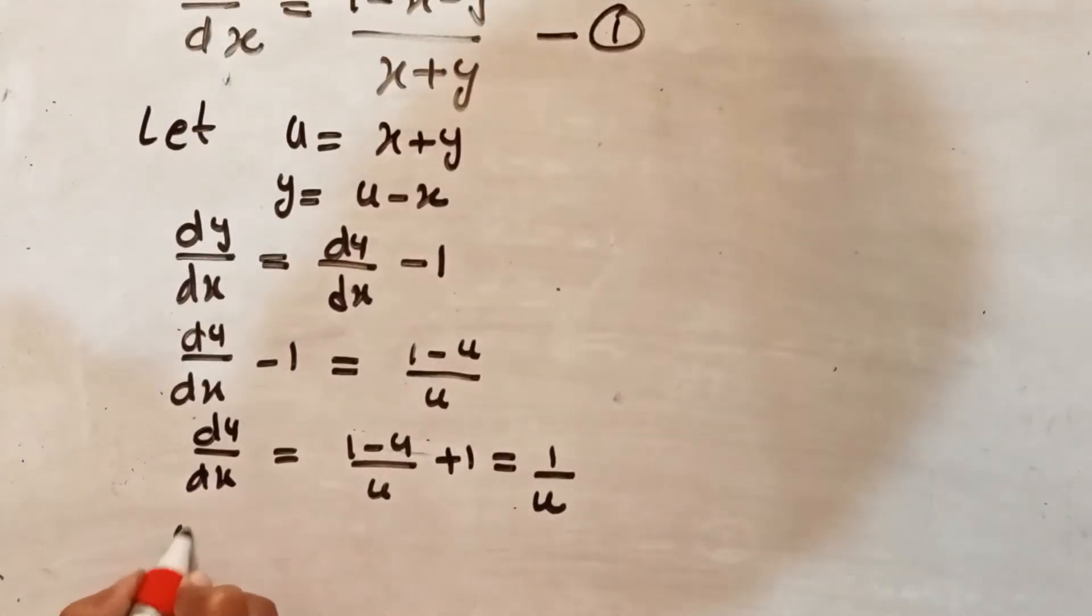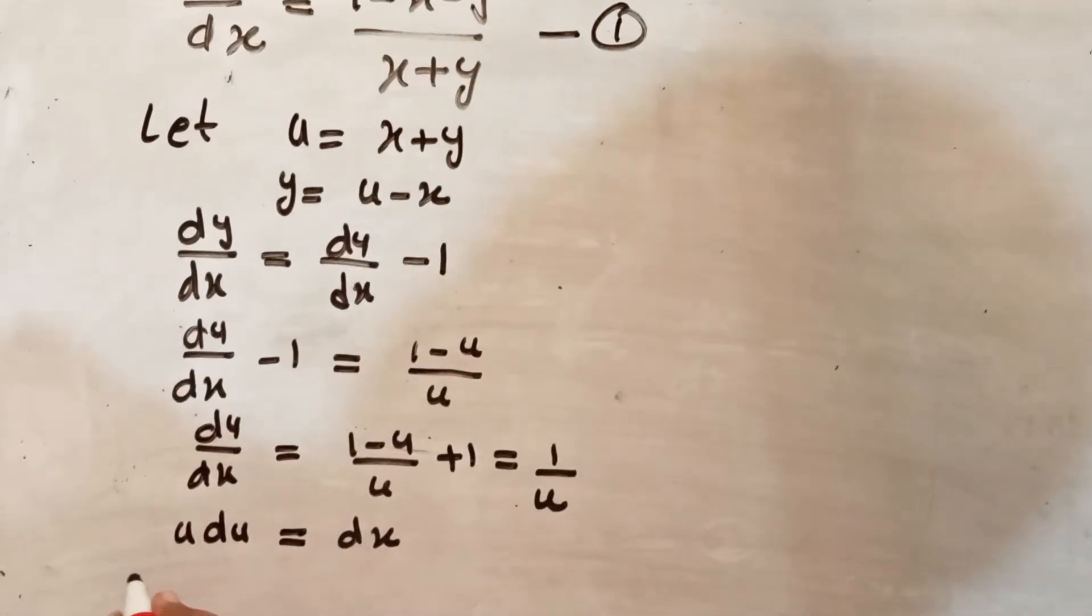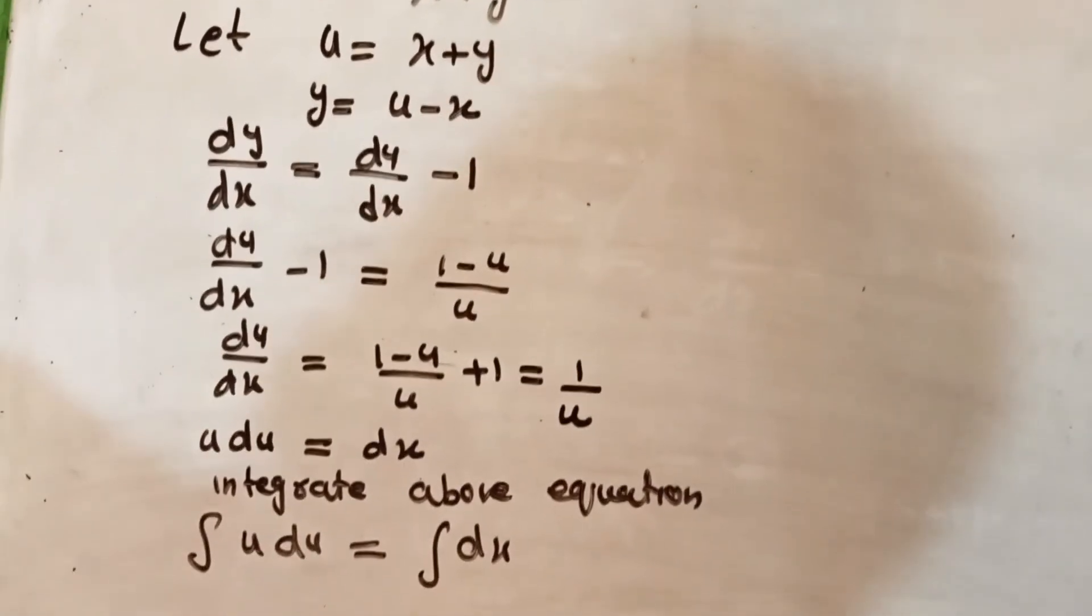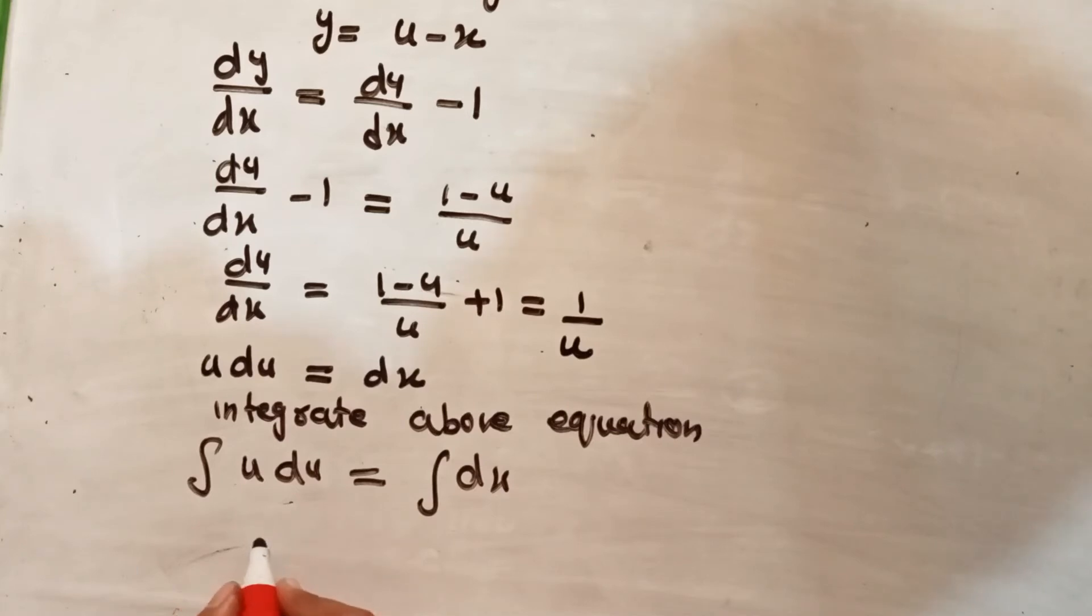So u du is equal to dx and integrate this equation. Integral u du is equal to integral dx, and integration of u is u square divided by 2 is equal to x plus c, which is constant of integration.